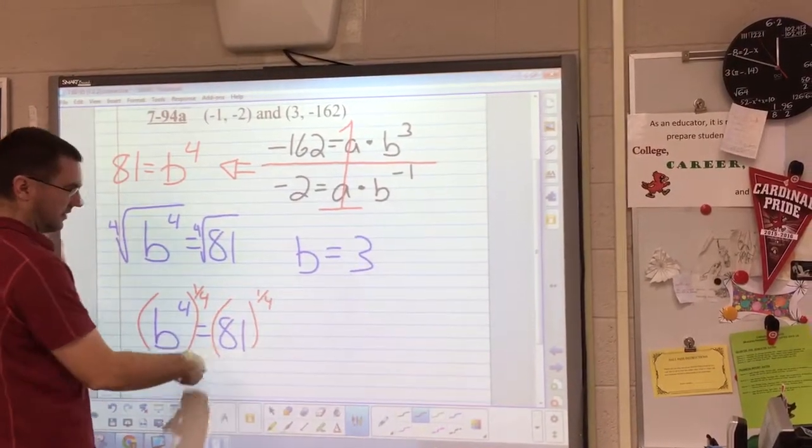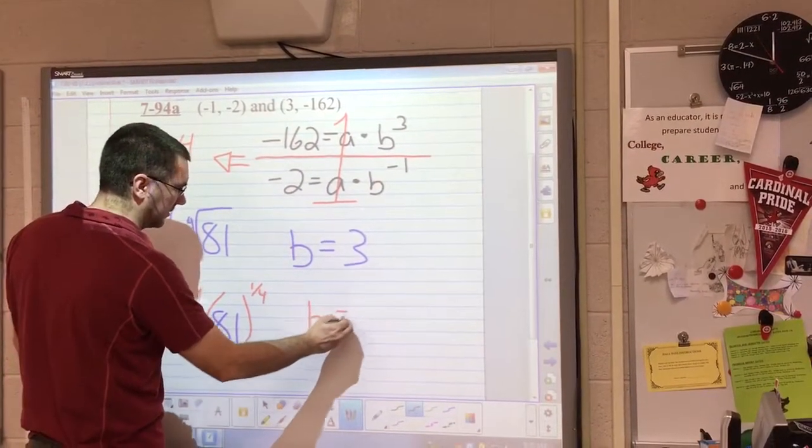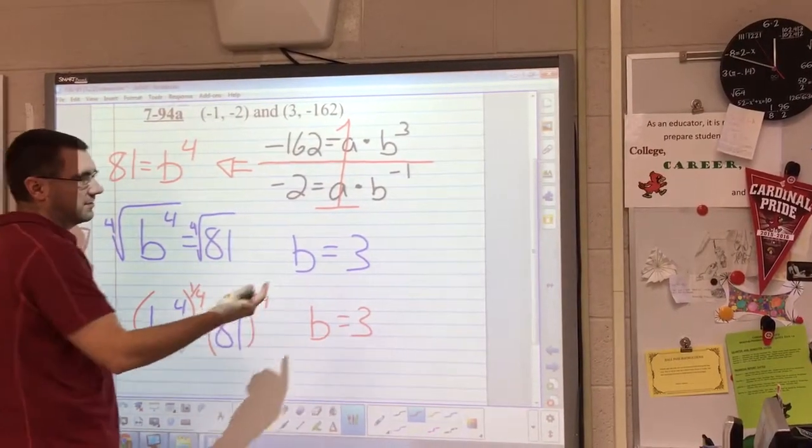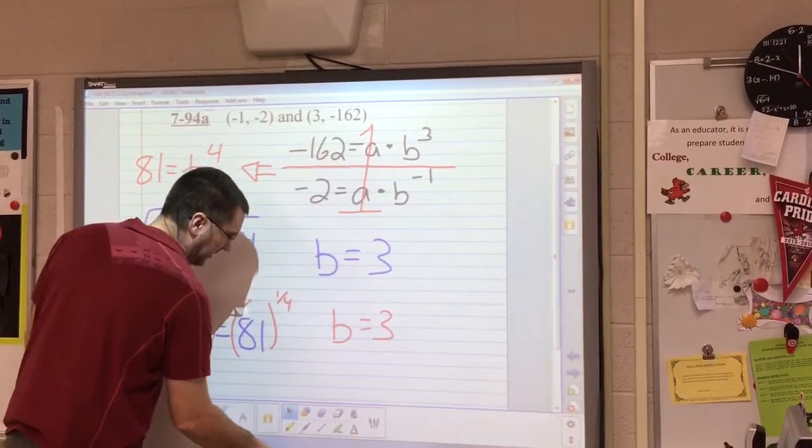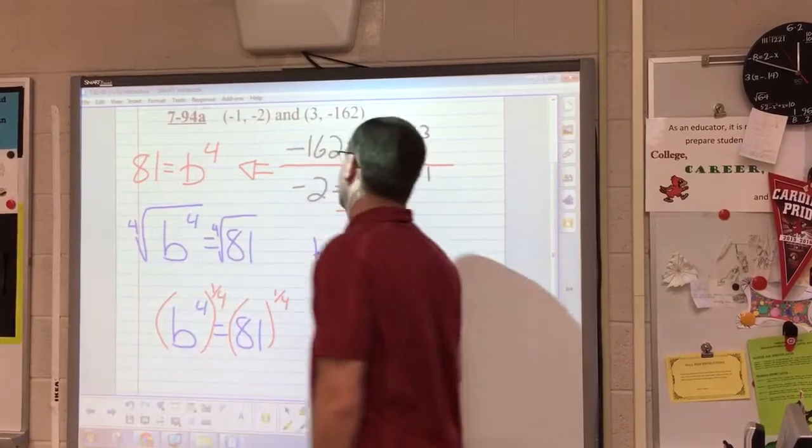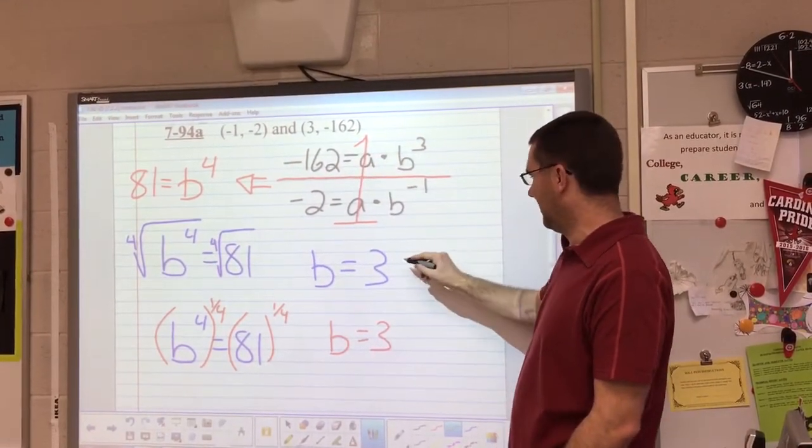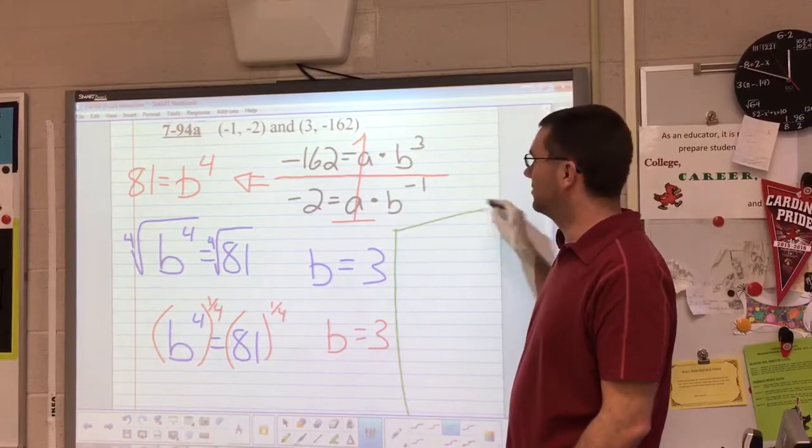Once you have b equals 3, you will take 3 and substitute it back into one of these equations. I like substituting it into the positive exponent equation and solve for your missing parameter.